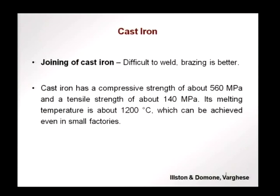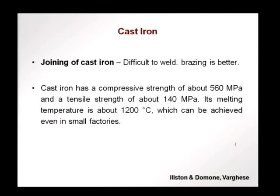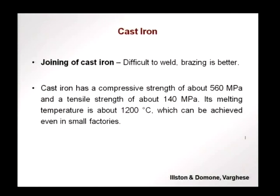Cast iron has a compressive strength of about 560 MPa and a tensile strength of about 140 MPa. You see the difference caused by the brittle nature between the tensile and compressive strengths. The melting temperature is about 1200°C, which can be achieved even in small factories, so you have a proliferation of factories where elements can be cast with cast iron. Common applications that you see are in the making of grills and other decorative elements using cast iron.